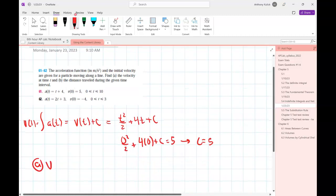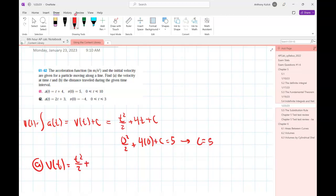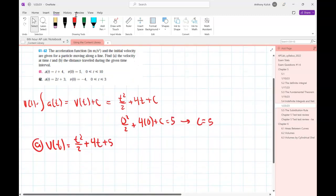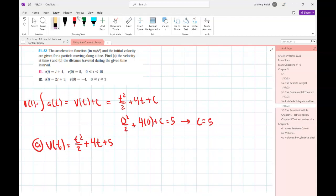So for part a, my velocity function is t squared over 2 plus 4t plus 5, right? Okay. And then my position function is going to be s(t), which is going to equal the integral of v(t), right?